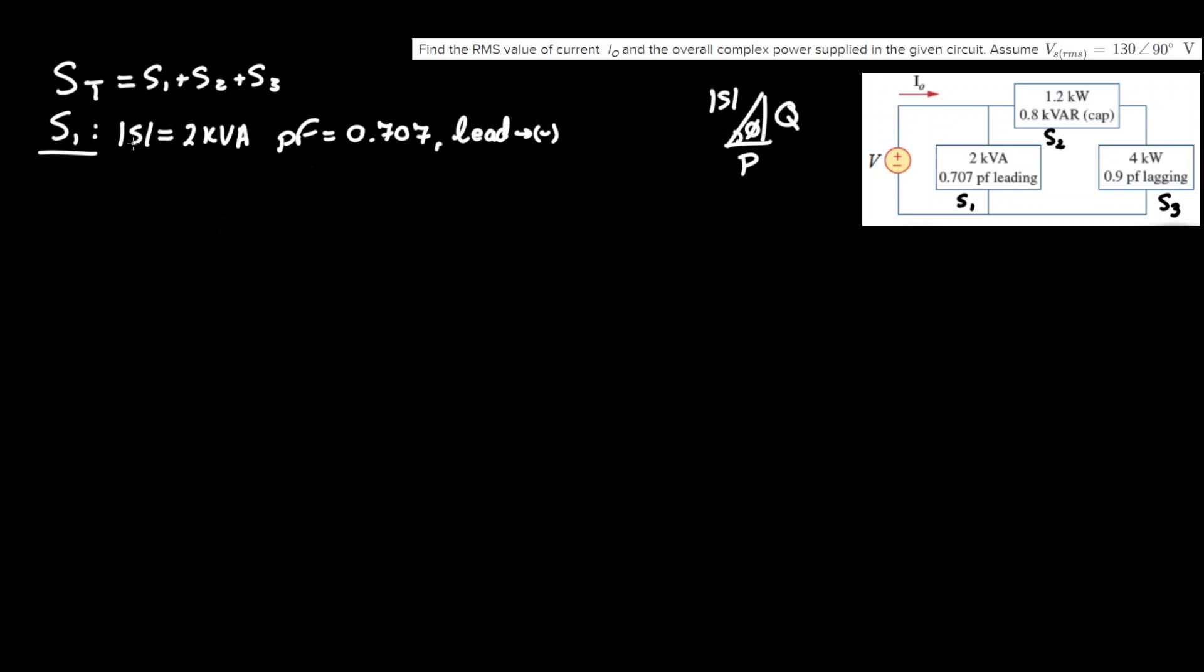So continuing on we have our magnitude S, however we don't have our angle for the phasor. So as we know, power factor equals, since we have lead it's negative, cosine inverse of 0.7, putting that into a calculator we get about negative 45 degrees.